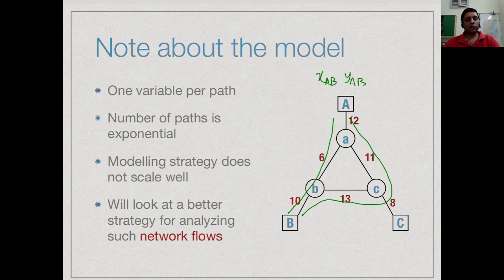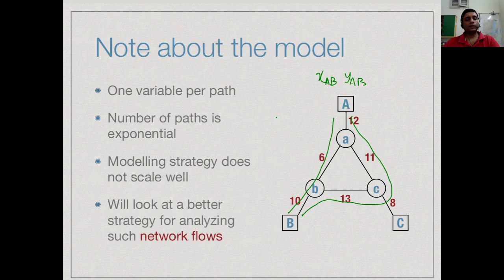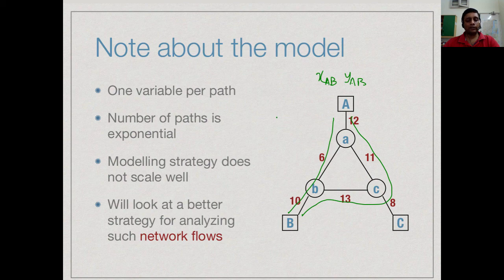This is not a good modeling strategy. What we are doing is we are taking this network bandwidth allocation model and we are implementing it or describing it using linear programming. But if we set up a linear program which has a large number of variables, then the problem is in some sense blowing up in complexity in the translation.